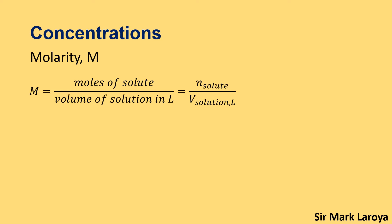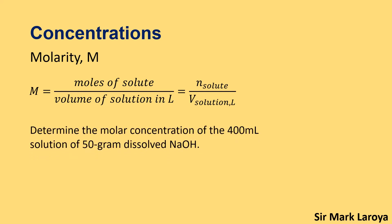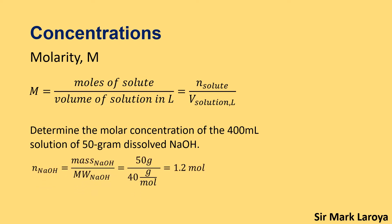Let us now solve a problem involving molarity. Determine the molar concentration of a 400 ml solution of 50 grams of dissolved sodium hydroxide. In this problem, the volume of our solution is 400 ml or equal to 0.4 liters, and the mass of our solute, sodium hydroxide, is 50 grams. The first thing we have to do is look for the number of moles of our solute. The number of moles of NaOH is simply mass over its molecular weight: 50 grams divided by 40 grams per mole gives us 1.2 moles.